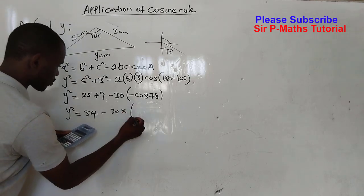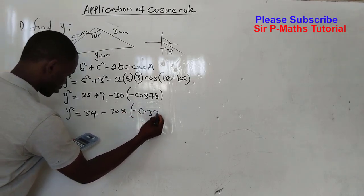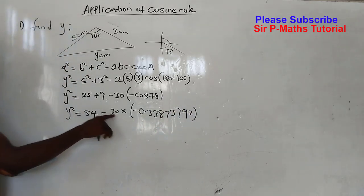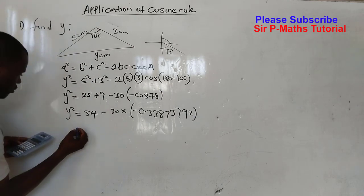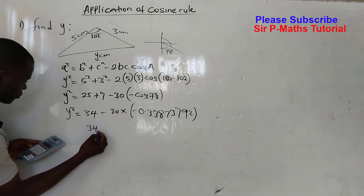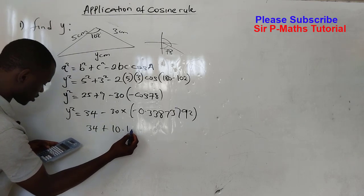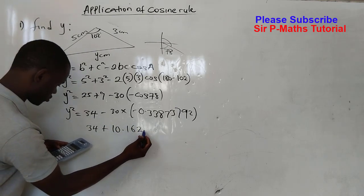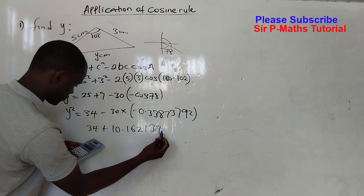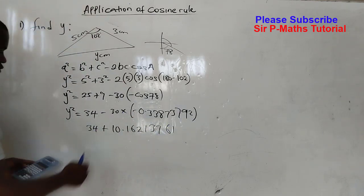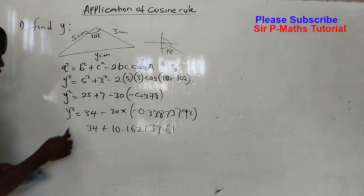This will give me -0.338733792, then multiply it with -30. I will have 34 + 10.16213761. You know that negative multiply negative gives us positive.